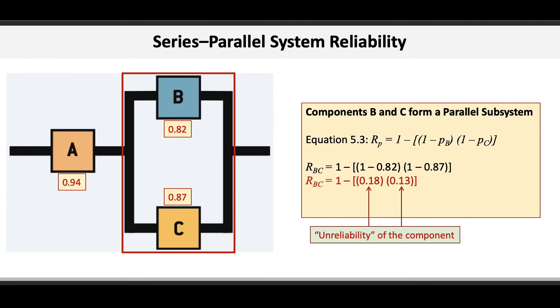You can think of the values of 0.18 and 0.13 as the unreliability of each component. So for example, if component B is 82% reliable, then it's 18% unreliable.